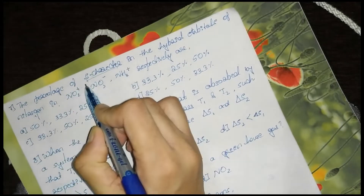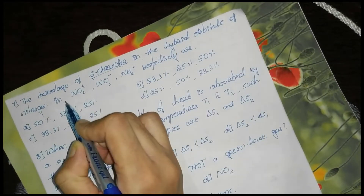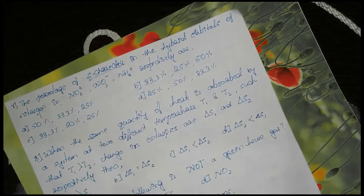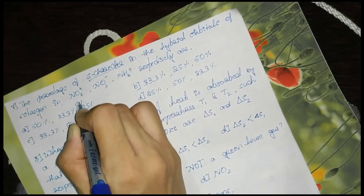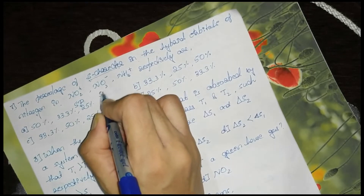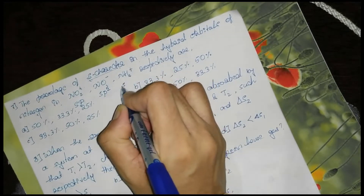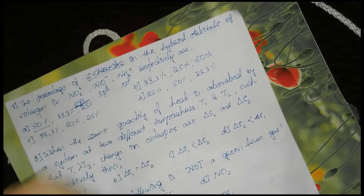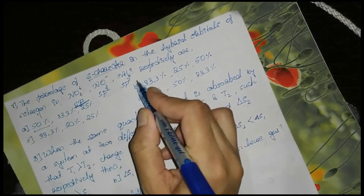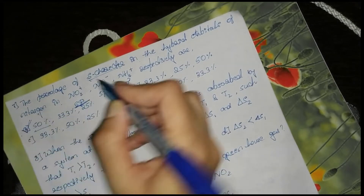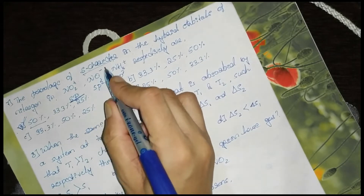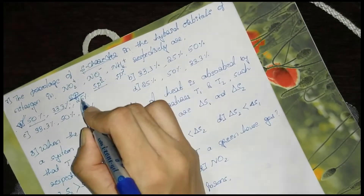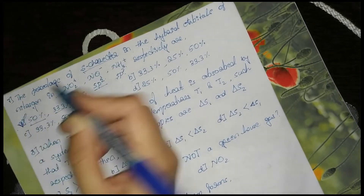Next: the percentage of S character in the hybrid orbitals of nitrogen in NO2+, NO3-, and NH4+ respectively. NO2+ has SP hybridization, NO3- has SP2 hybridization, and NH4+ has SP3 hybridization. SP gives 50% S character, SP2 gives 33.3%, and SP3 gives 25% S character. Option A is the correct answer.